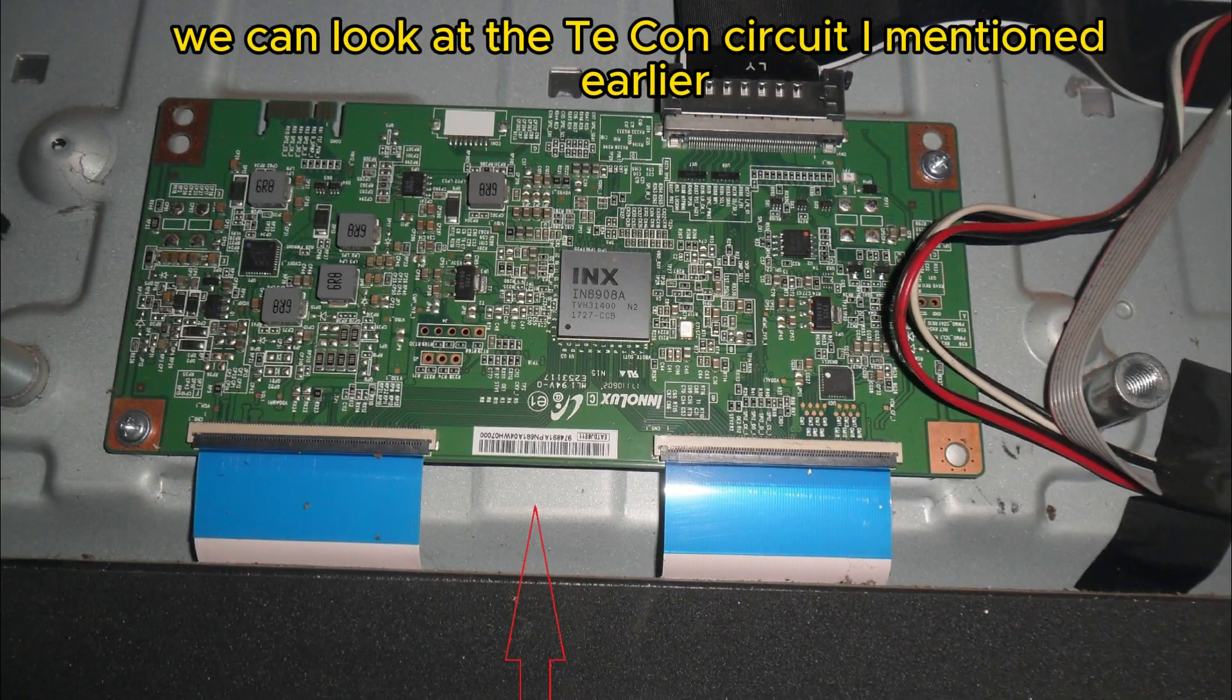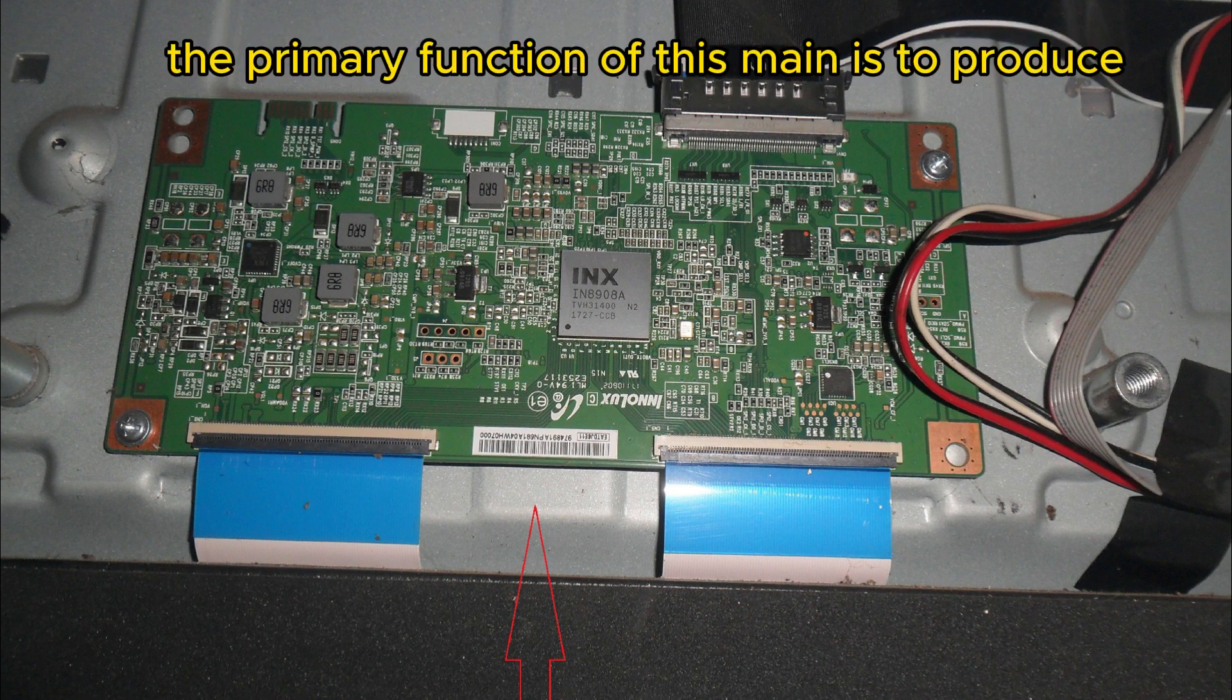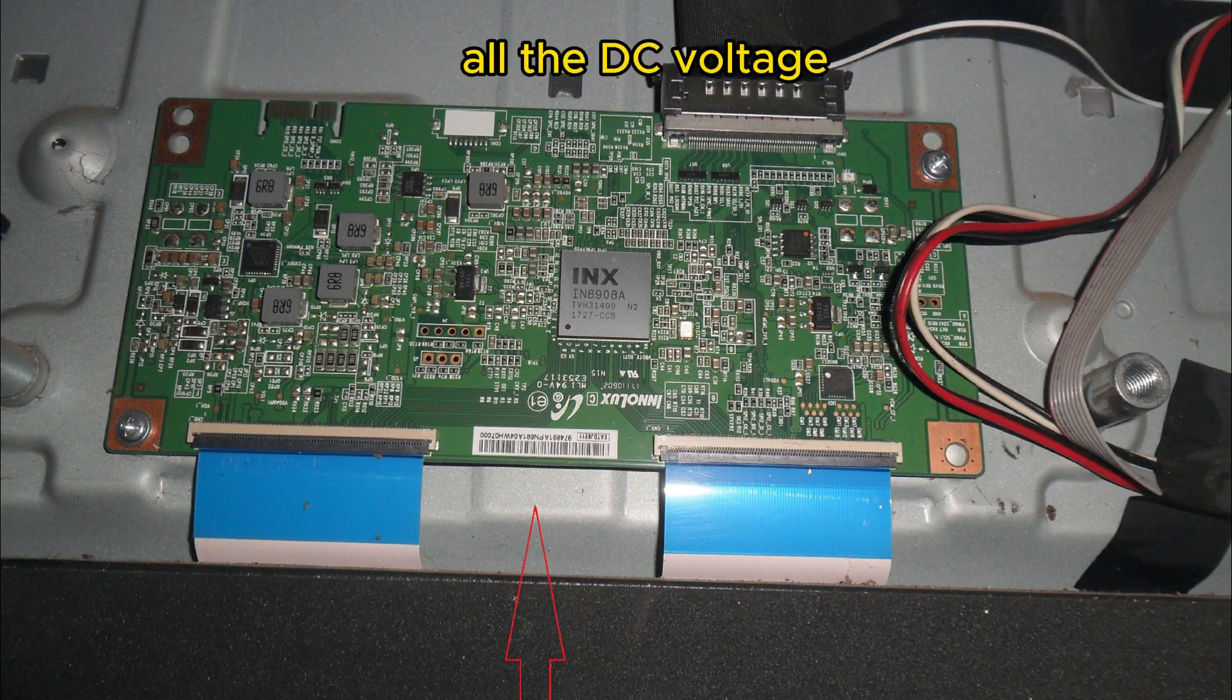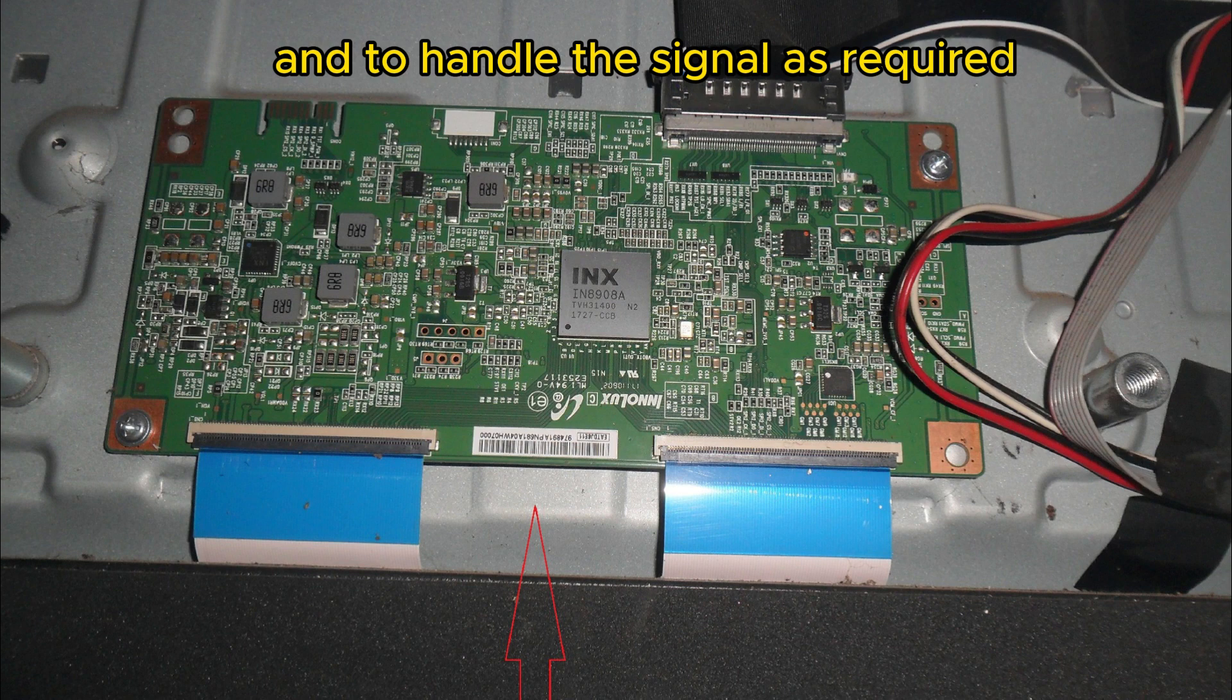Then we can look at the T-CON circuit I mentioned earlier. The primary function of this main is to produce all the DC voltage required for the operation of the display panel and to handle the signal as required.